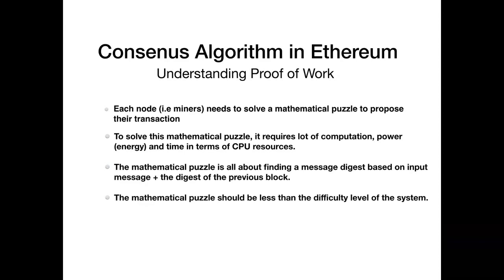Now the mathematical puzzle should be less than the difficulty level of the system. The difficulty level is an arithmetically derived number set by the system. Now once the puzzle is solved, all other nodes should agree on the solution and apply the same formula to arrive at the consensus.